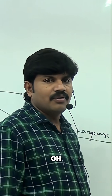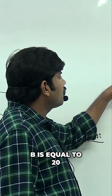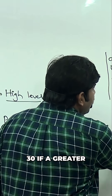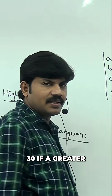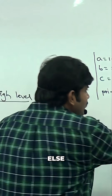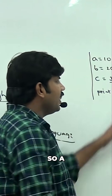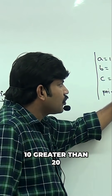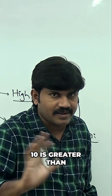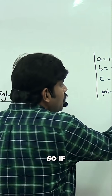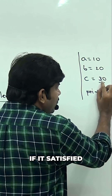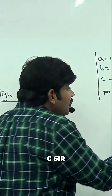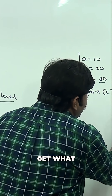Just observe: a is equal to 10, the value of a is 10; b is equal to 20, the value of b is 20; c is equal to 30 if a greater than b, else 40. So what is the value of a? 10. Is 10 greater than 20? No, that fails. So if the condition is satisfied it's 30, otherwise it's 40 — so the value of c we are going to get is 40.